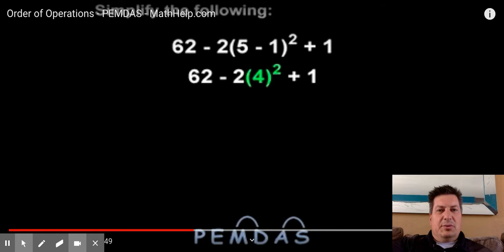It doesn't mean 4 times 2, or 4 times 3, or 4 times 5. What it means is that you have two 4s that you'll multiply together, which is 4 times 4, or 16.